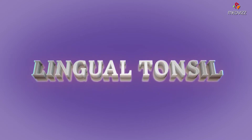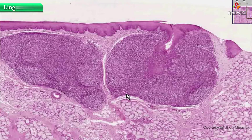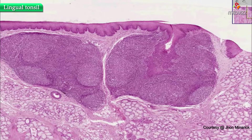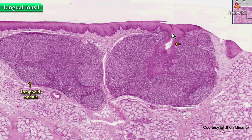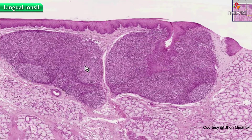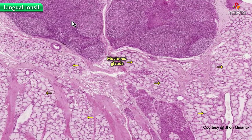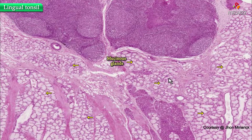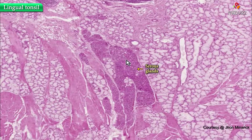This is a lingual tonsil. Here is some more lymphoid tissue — you can see lymphoid nodules intermingled with an overlying stratified squamous mucosa, set in an area with numerous glands, chiefly mucinous glands like you see here, as well as some serous glands throughout.